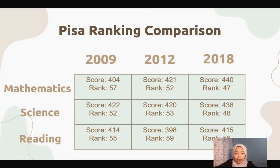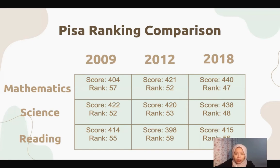Let's look at the PISA ranking comparison throughout the years our country has been participating. In 2012, in all three categories — math, science, and reading — our country was not able to achieve the average level. We scored 404 for math, 422 for science, and 414 for reading. However, in 2018, we improved significantly in all three PISA literacies. Compared to 2012, we got 440 for math, 468 for science, and 415 for reading. We moved from the bottom 30% to the middle 30% of the ranking.